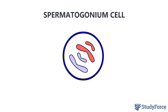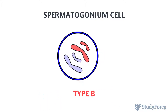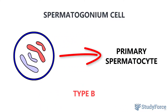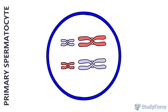Furthermore, there are two types of spermatogonia formed: type A and type B. Type B is the one we're interested in, because it goes on to divide mitotically to produce primary spermatocytes, while type A acts as a reserve for future sperm development.